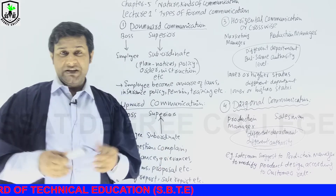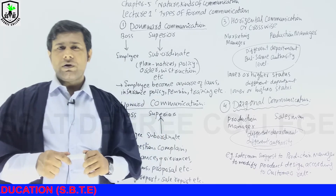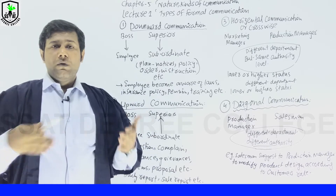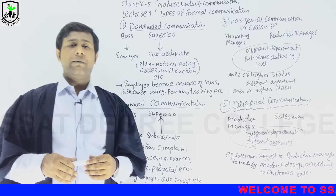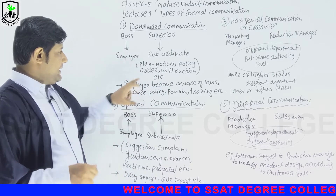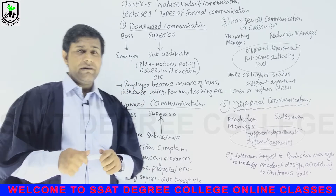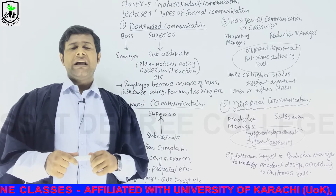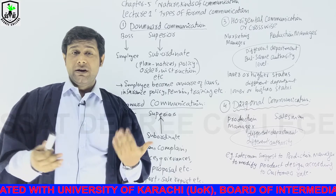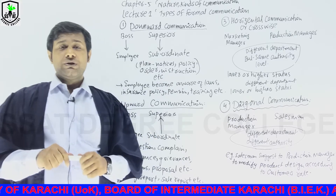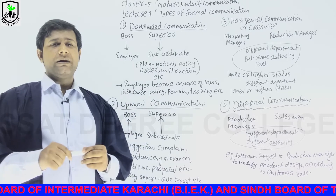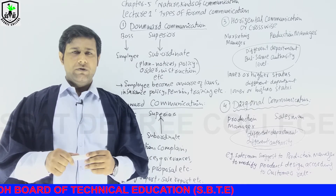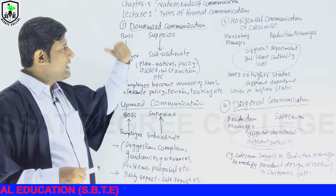When the boss wants to convey a message — opinions, letters, memos, or writings — he conveys all these things in a way that subordinates or lower authority staff can understand and give feedback. Employees become aware of laws, insurance policies, pensions, and training through downward communication. Employees become aware of changing rules and regulations in the organization. When the boss conveys messages in proper order, employees become aware of changing laws, pension policies, insurance, salaries, and bonuses.